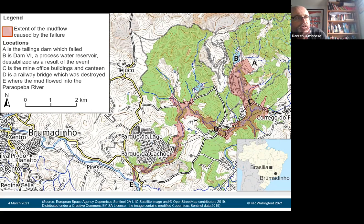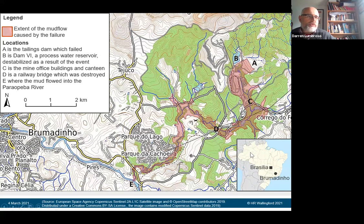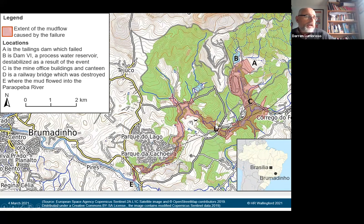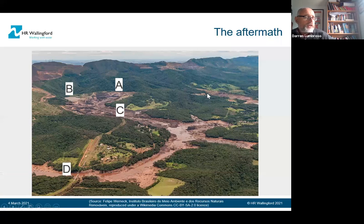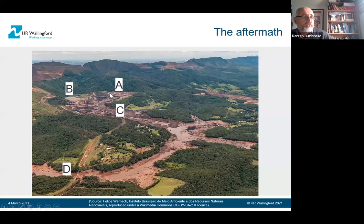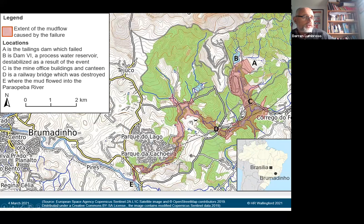This map shows the Brumadinho tailings dam area. The brown outline shows the maximum extent of the mud flow. Point A is where the tailings dam was. Point B was a water reservoir for processed water. Point C was where the mine offices and canteen were — it was lunchtime, so many workers were there. Point D is a railway bridge that was washed away. A photo shows the railway bridge washed away, the mining offices, the process water reservoir which was badly damaged but remained intact, and where the tailings dam was.